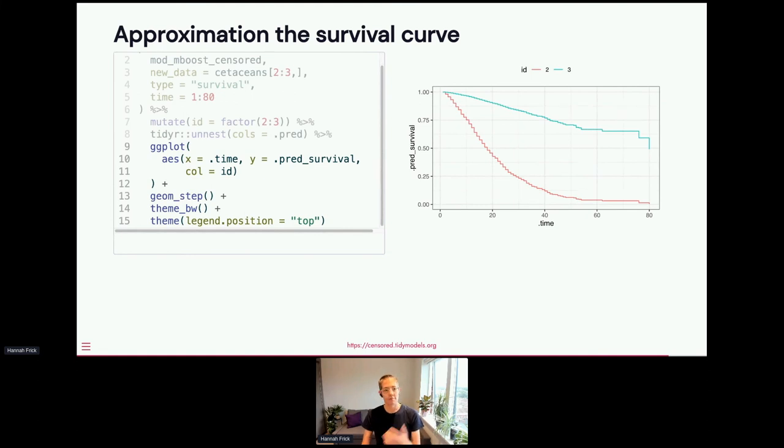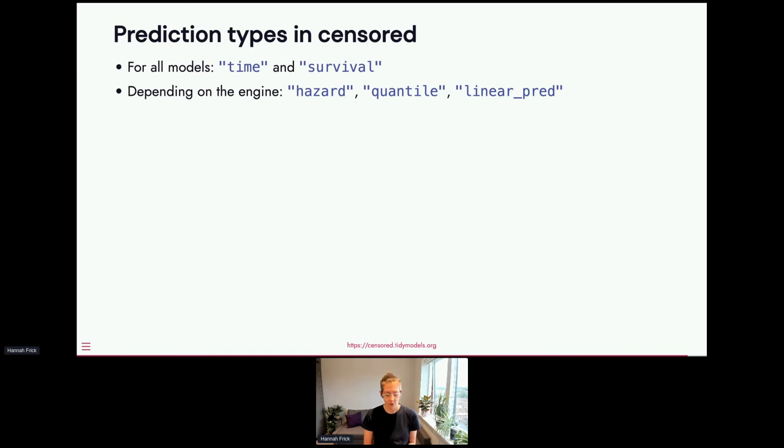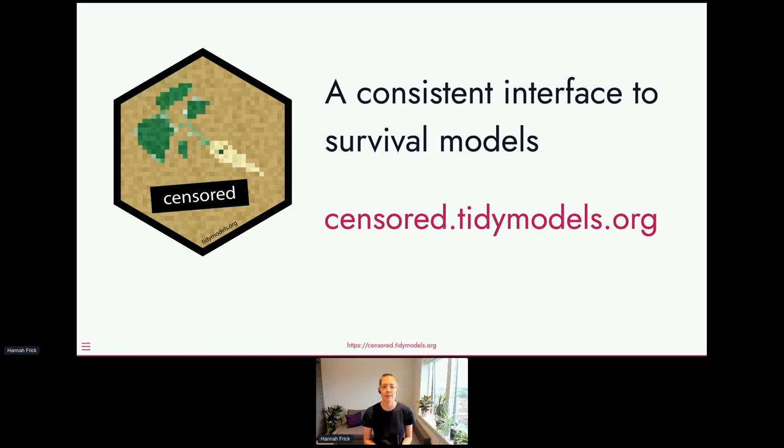So to collect the thoughts on prediction, you can predict survival time and survival probability for all of the models that are in censored. And depending on the engine, you may also get predictions for the hazard, the quantile of event time distribution and the linear predictor if your model has that. So, censored is here to provide you with a consistent interface to various survival models. And that consistency applies to both how you specify and fit and how you predict and what you get back for this. And I'd love for you to try it out and give us feedback. Best feedback venues are probably GitHub. So, censored.tidymodels.org has a link out to the GitHub repository. Leave an issue there or post on RStudio Community. And that's my conclusion. Thank you.